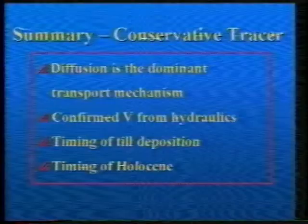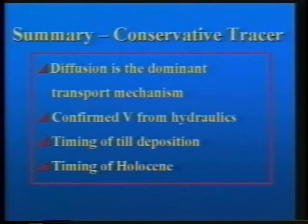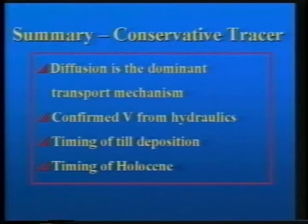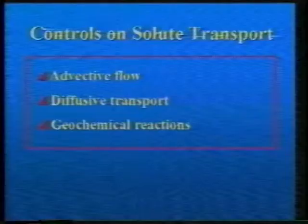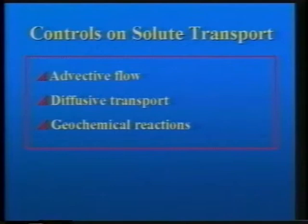Where do we stand with our conservative tracers? Conservative tracers show that diffusion is a dominant process. We can estimate long-term advective velocity from these data, get a fairly accurate estimate on the timing of till deposition, and get a confirmation of the onset of the Holocene. With that said, let's turn to reactive transport — or what we conceived as reactive transport — which we did on the upper 50-meter profile, dealing with the Holocene profile.